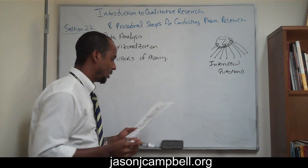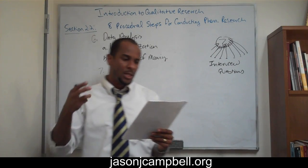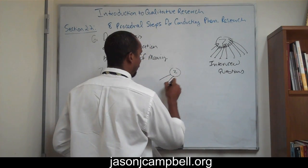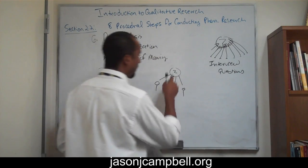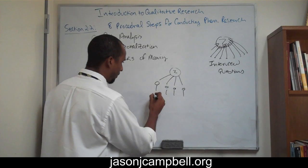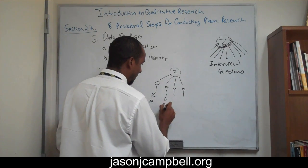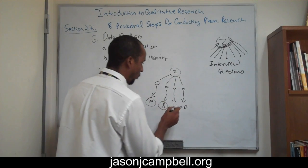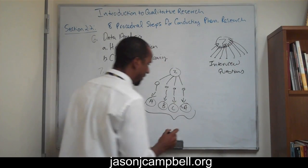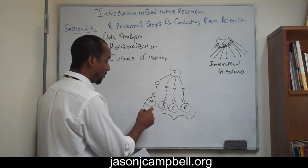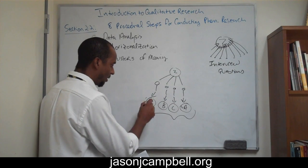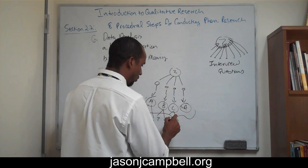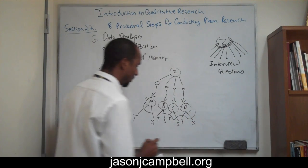Number seven: unified descriptive account. Let's say we have different participants — we'll just make it four — and one theme. Each person has a description: A, B, C, and so on. We have four different descriptions. In description A, I need to identify what facet is textural and what facet is structural — and the same for each description. What facet is textural, what facet is structural, across all accounts.